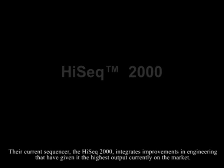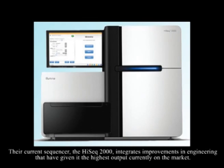Illumina also relies on the chain termination method. Their current sequencer, the HiSeq 2000, integrates improvements in engineering that have given it the highest output currently on the market.